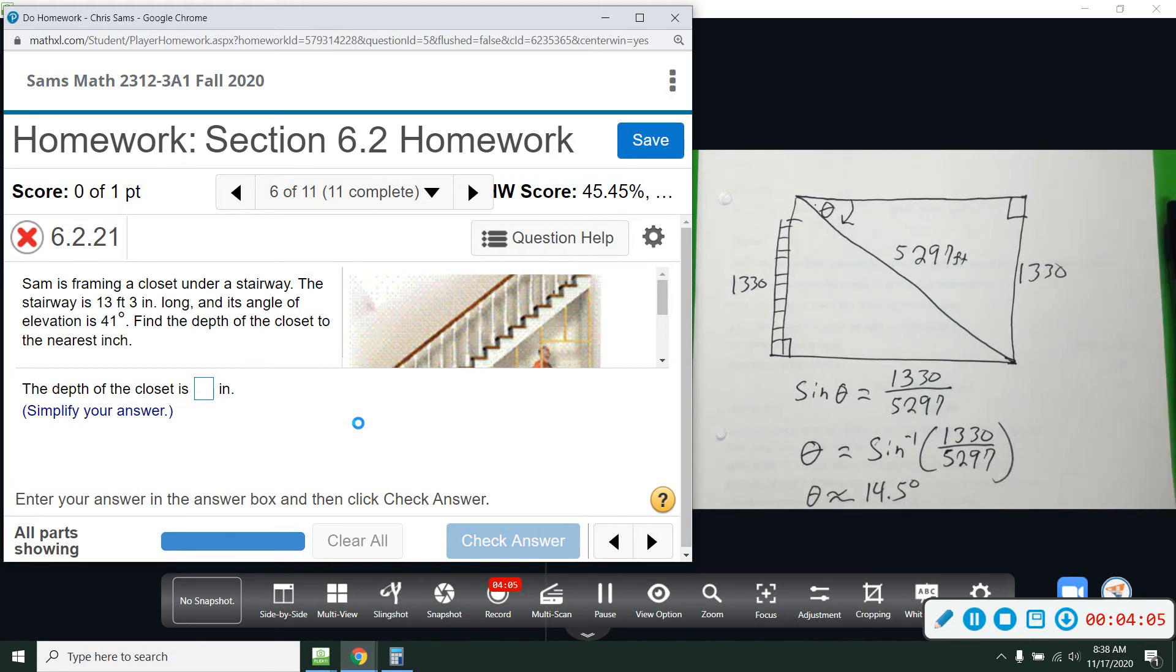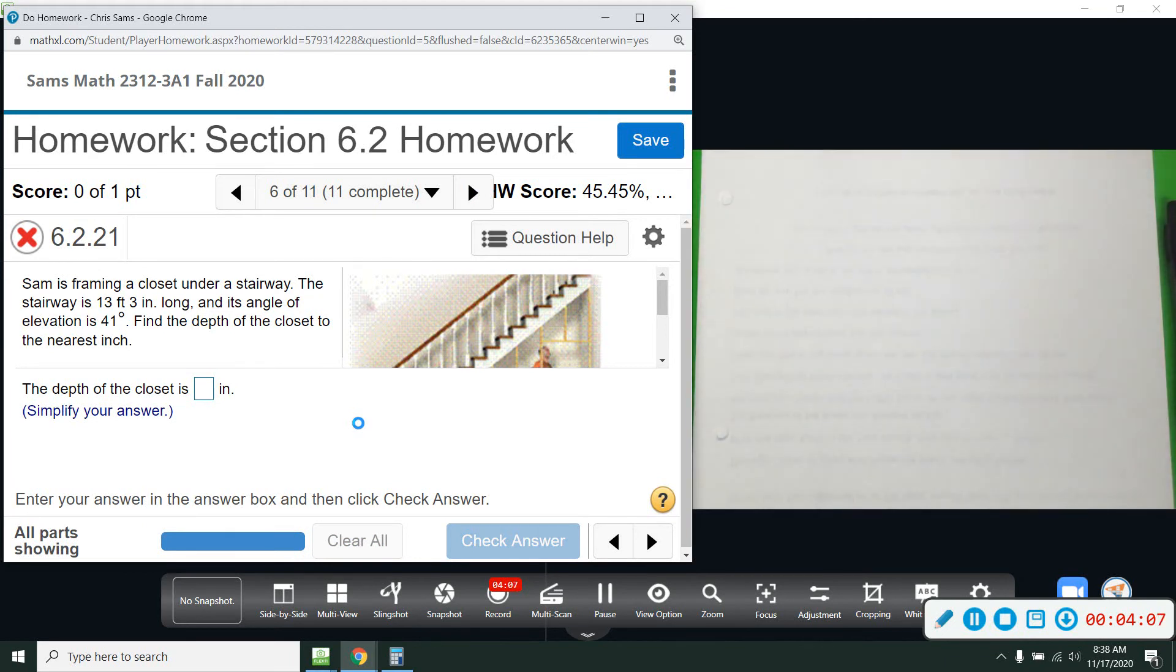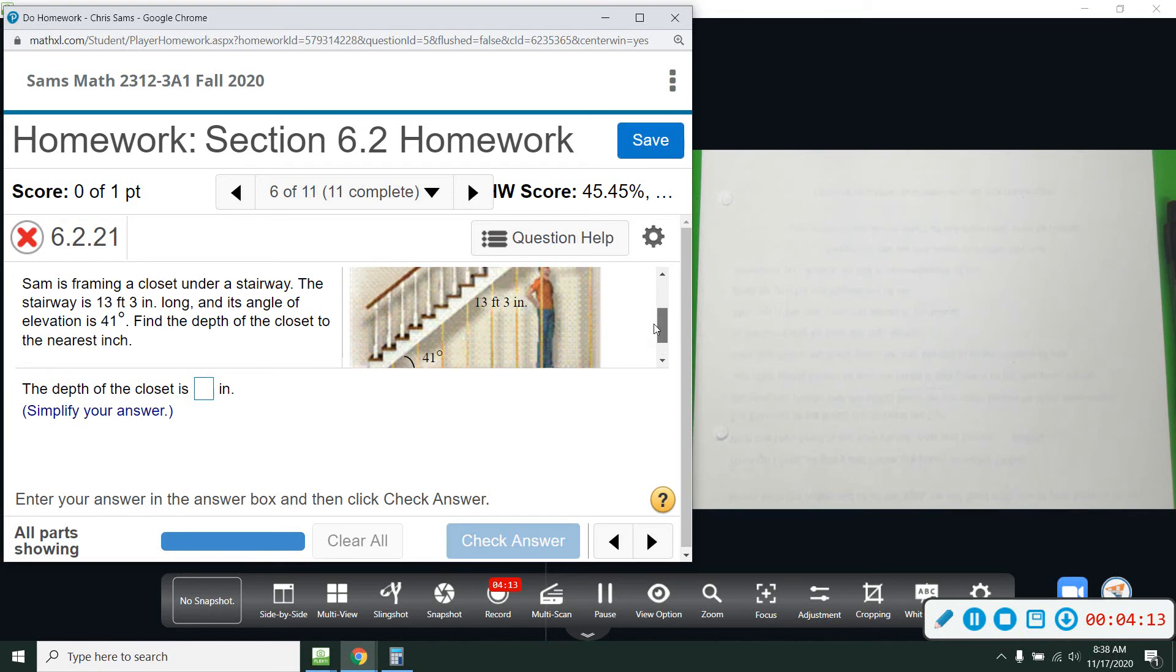Alright, so this one is another one similar to what we just saw. It's hard to see the full picture here, but we have a staircase. We have a staircase and there's an image showing the length of the staircase, the diagonal, and then we're looking for the D distance on the bottom. It's framing the closet under the stairway. It's 13 feet, 3 inches long. Angle of elevation is 41.